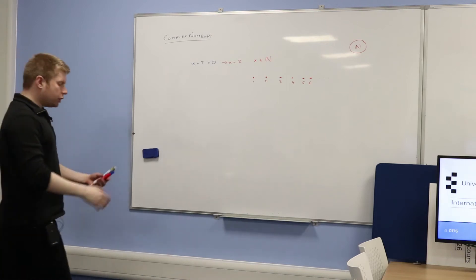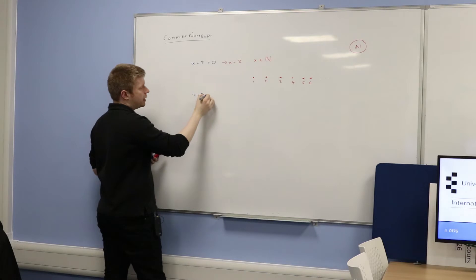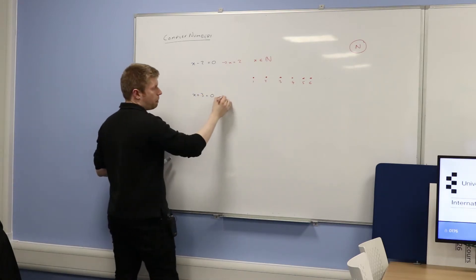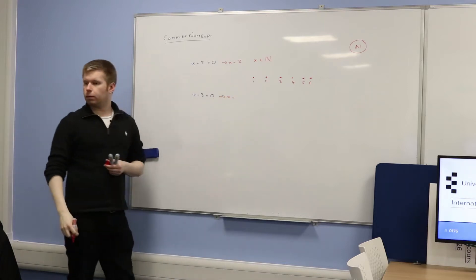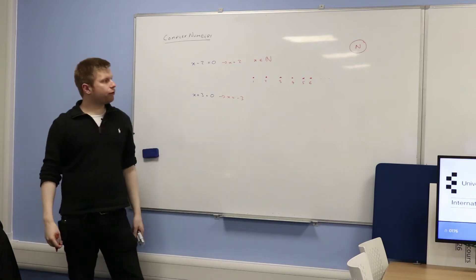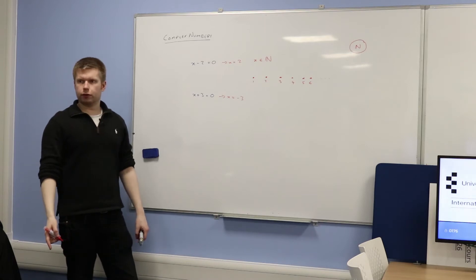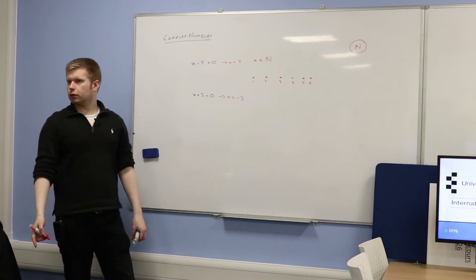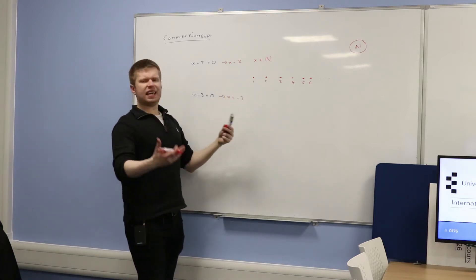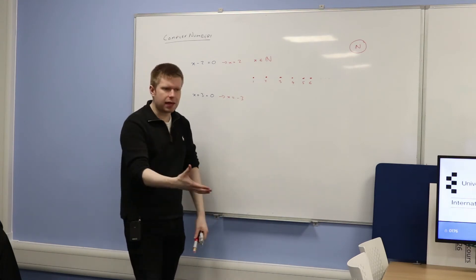But fairly obviously, there are other types of equations. For example, if I give you x plus 3 equals 0, what would the solution be? x equals negative 3. Now, is negative 3 a natural number? No. It's not a counting number — you can't have negative 3 pencils; that doesn't make sense.